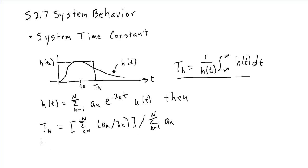In the special case where the impulse response just consists of a single mode term, n equal 1 case, then th is equal to 1 over lambda, the time constant of that single mode.